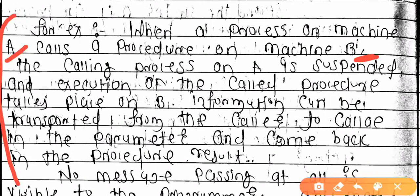For example, when you do a Google search, you type a keyword and press Enter. Your connection goes to Google's server. That server finds the related website and displays it on your screen. Essentially, your computer passes keywords to a remote server machine — this is what Remote Procedure Calls do, passing data between different machines.